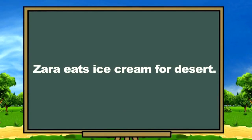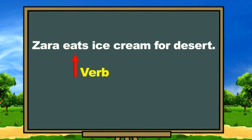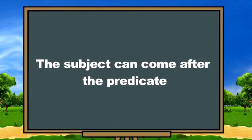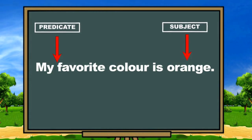'Zara eats ice cream for dessert.' Here, the verb is 'eats.' When we ask who eats, we get the answer Zara, so Zara is the subject. The subject can also come after the predicate. For example: 'Orange is my favorite color' versus 'My favorite color is orange.' In the second sentence, the subject came after the predicate.